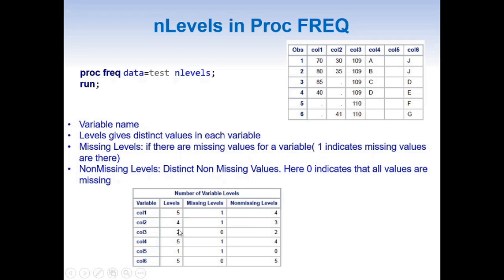We are more interested in the other two columns: 'Missing Levels' and 'Non-Missing Levels.' Missing Levels indicates whether there is a missing value for a variable or not. In the case of col1, col2, col4, and col5, we have missing values, and we can see a value of one in Missing Levels wherever a missing value is present. This helps us find any missing value related information.